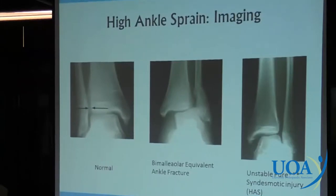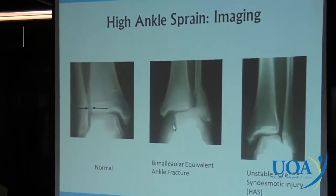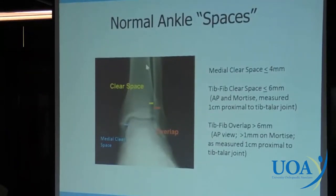On the left is a normal ankle — we're looking at the tib-fib clear space and the medial joint space where the deltoid would be. The middle picture shows a bimalleolar equivalent ankle fracture: the fibula is fractured, the syndesmosis disrupted, with obvious widening at the medial clear space and between the tibia and fibula. More subtle is the picture on the right — no fracture, but if you look carefully there is space between the tibia and fibula, and the medial clear space is open as well. That's an unstable pure syndesmotic injury.